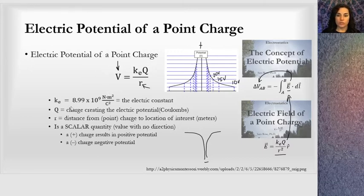It's pretty explanatory in here. KE is 8.99 times 10 to the 9th with those units, that's the electric constant. Q is the charge. You will actually want to plug in the sign here, and I have that down here.